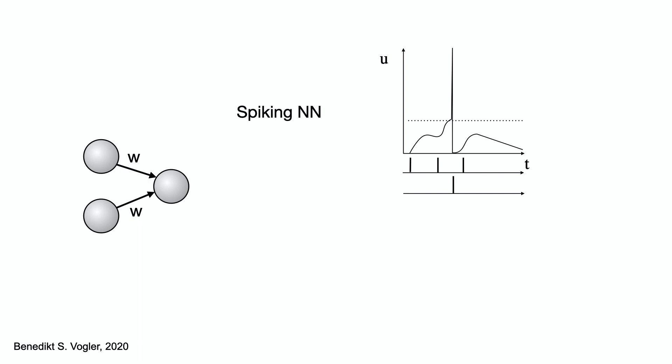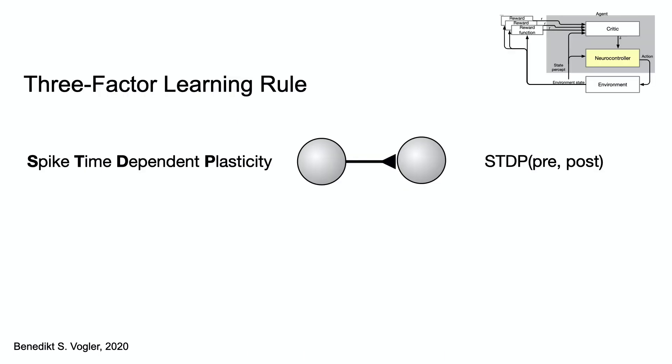This time dimension differentiates spiking neural networks from artificial neural networks. Here, the weighted activity is just summed up and put into an activation function. Finding the right weights is the core of the learning process.